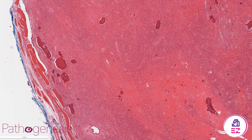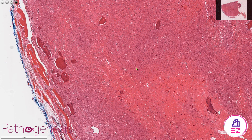Hello and welcome to Path Made Easy. Today's example is a cemento-ossifying fibroma, which is a benign fibroosseous lesion of the jaws. The key thing with this is that histology alone isn't sufficient — you must correlate what you're seeing histologically with any radiology or imaging that you have.